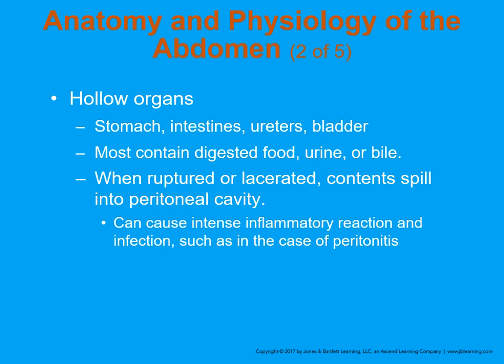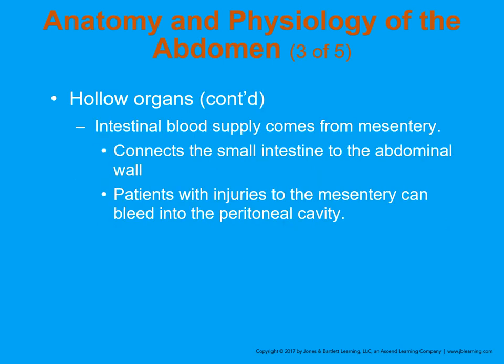There are hollow organs and, conversely, solid organs. The hollow organs contain digested food, urine, bile, and other chemicals that, if they spill out into the peritoneal cavity or outside of their intended pathways, can cause a lot of pain, discomfort, and even infection. Intestinal blood supply from the mesenteric artery connects to smaller walls of the abdomen and the peritoneal cavity. We can have major bleeding in the abdominal cavity and not really know until it's much too late for the patient.